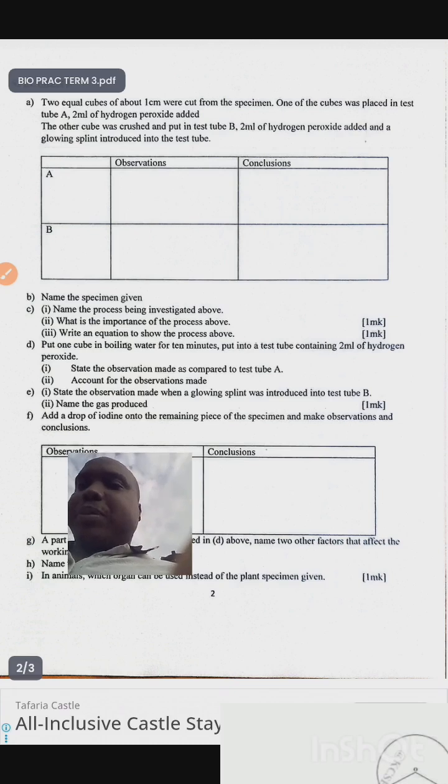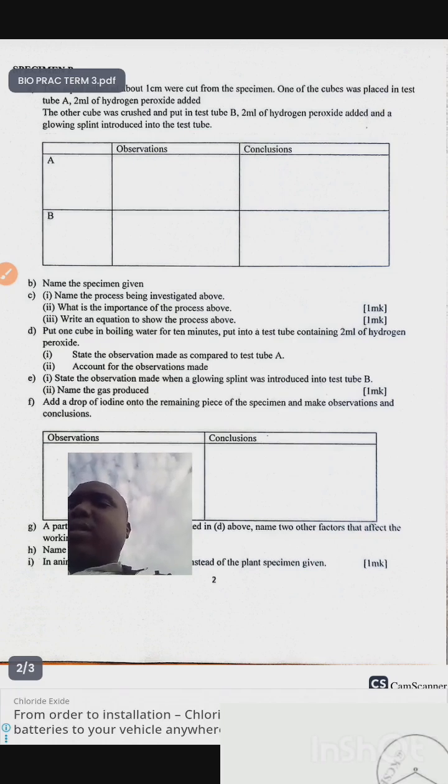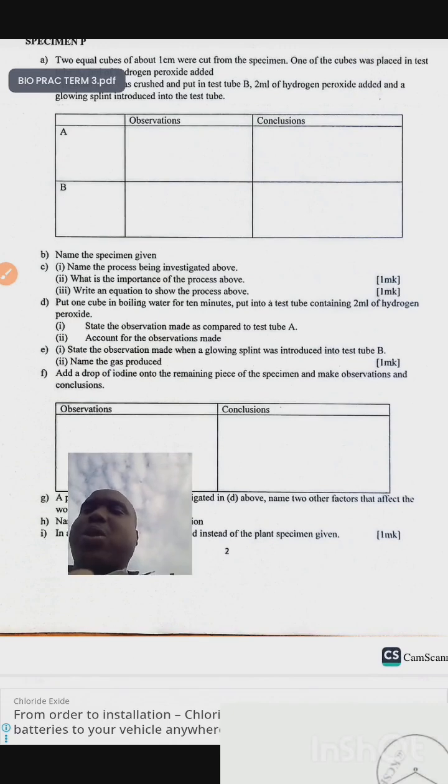Name the specimen given. Name the process being investigated above. What is the importance of the process above? Write an equation to show the process above. Put one cube in boiling water in a boiling tube for 10 minutes, put into test tube containing 2 ml of hydrogen peroxide. Study the observation made as compared to test tube A. Account for the observations made.